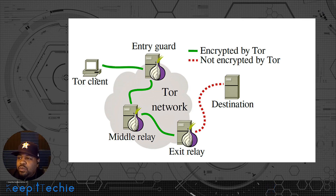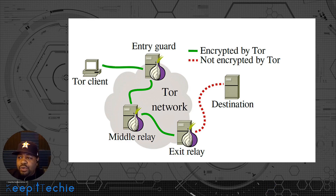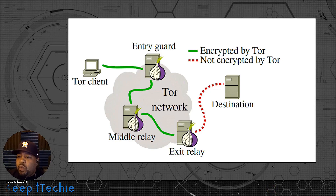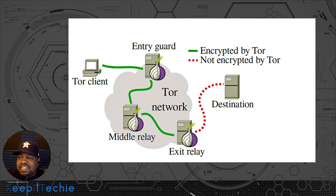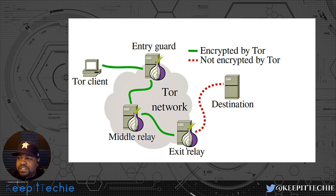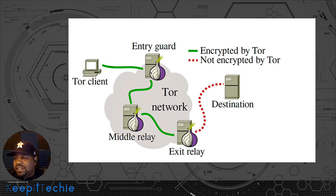Basically, you are the client. When you open up the Tor browser, it creates connections to about three different nodes within the network — and these nodes could be all over the world. So you might have a node in Germany, a node in Pakistan, and a node in France or the US. Your Tor browser creates encryption keys for each one of those nodes — one for the entry node, one for the middle relay, and one for the exit node. The client then encrypts the data in three layers.